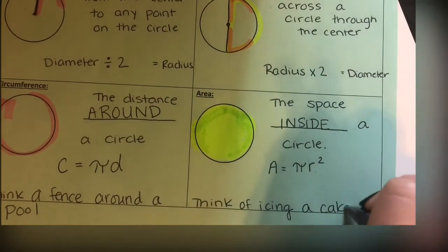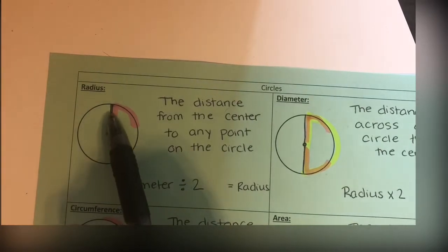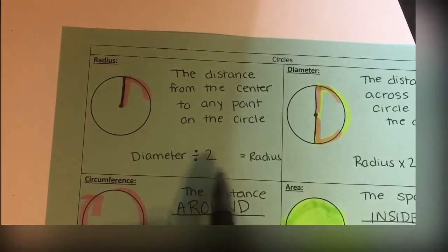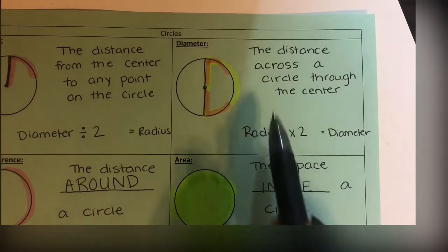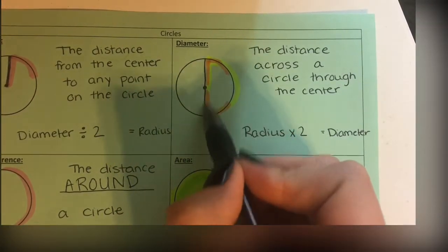Okay, so to review: I have radius—radius is the line from the center halfway. It makes a little 'r.' Diameter divided by 2 equals radius. The diameter is the line all the way across a circle.